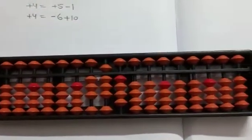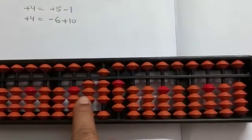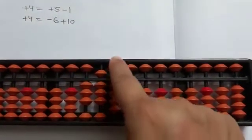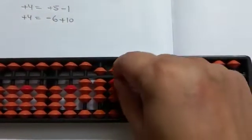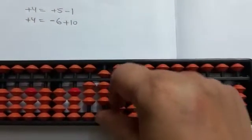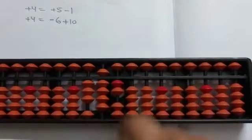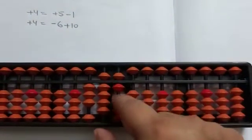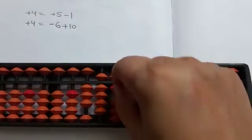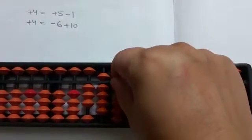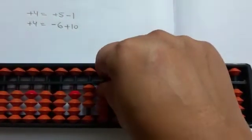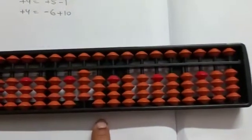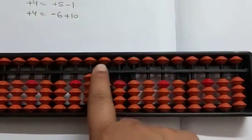Now value is 384. Again plus 4 is: plus 5 minus 1, minus 6 plus 10, plus 5 minus 1, minus 6 minus 90 plus 100. So our last answer is 400.